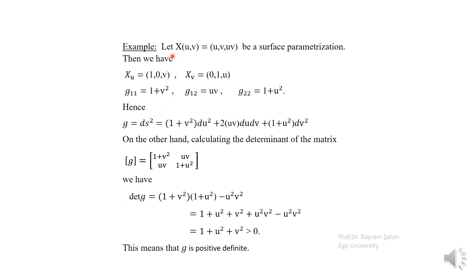Consider an example: let x be the surface parameterization given by x(u, v) = (u, v, uv). Taking partial derivatives, x_u = (1, 0, v) and x_v = (0, 1, u). So g₁₁ = 1 + v², g₁₂ = uv, and g₂₂ = 1 + u². Thus ds² takes this form. Calculating the determinant of the matrix g, we find it is always greater than zero, so this bilinear form is positive definite.